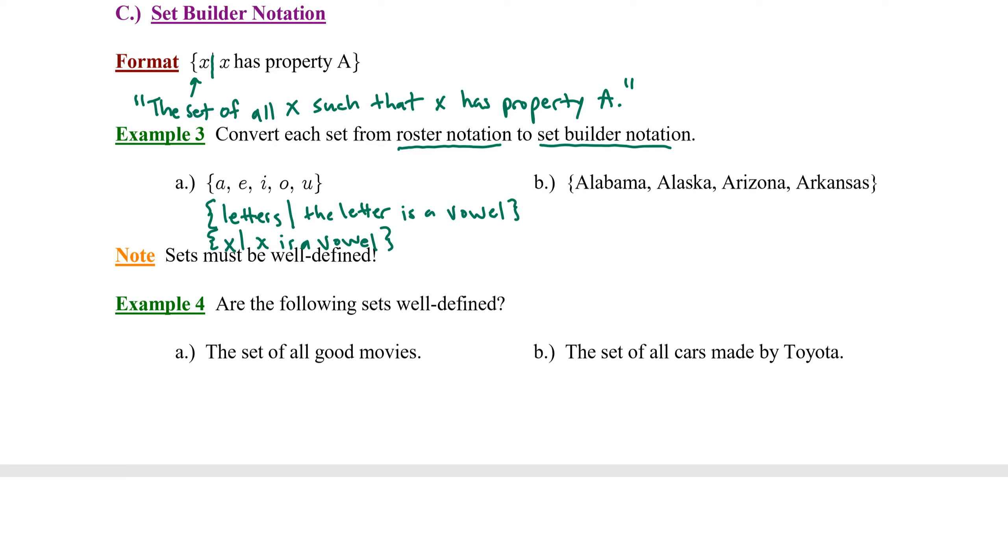Next example, the set containing Alabama, Alaska, Arizona, Arkansas. Clearly those are all states, and the property that they have in common is that they all begin with A. So in set builder notation we can say this is the set of all states such that the state begins with A. Keep in mind you do have freedom with this spot. You can use a variable placeholder, the set of all X, such that X is a state that begins with A.